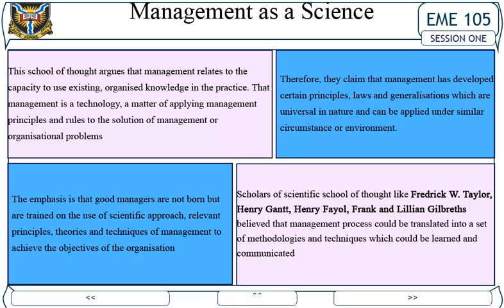Management as a science: This school of thought argues that management relates to the capacity to use existing organized knowledge — that management is a technology, a matter of applying management principles and rules to solve organizational problems. The emphasis is that good managers are not born but are trained in the scientific approach, using relevant principles, theories, and techniques of management. Therefore, this school claims that management has developed certain principles, laws, and generalizations that are universal and applicable under similar circumstances.